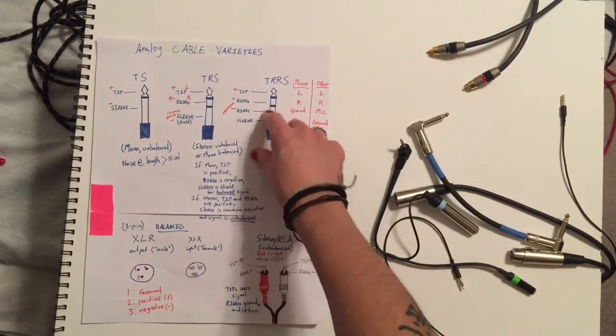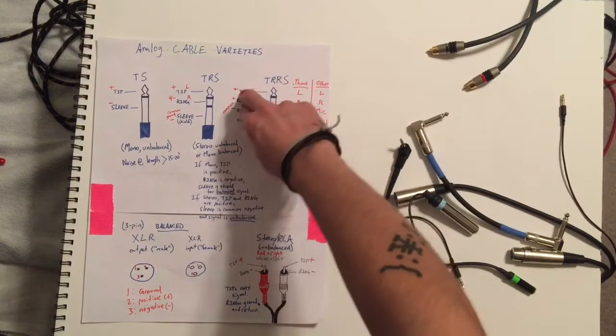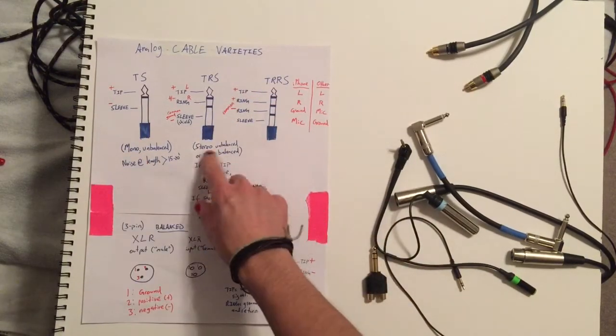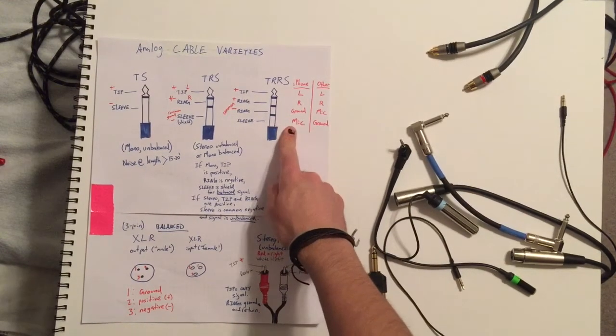So then what they've done is taken the second ring here and that is our common negative to balance out our two positives here but of course that means that we get a stereo unbalanced signal. And then the sleeve functions as the mic input.